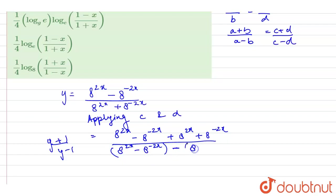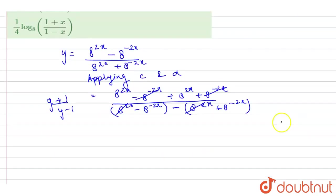Okay, so here 8 to the power minus 2x and this goes off and here this will go, this will cancel off. So now what we are left with, we are left with y plus 1 upon y minus 1 is equal to 2 times 8 to the power 2x upon minus 2 times 8 to the power minus 2x.